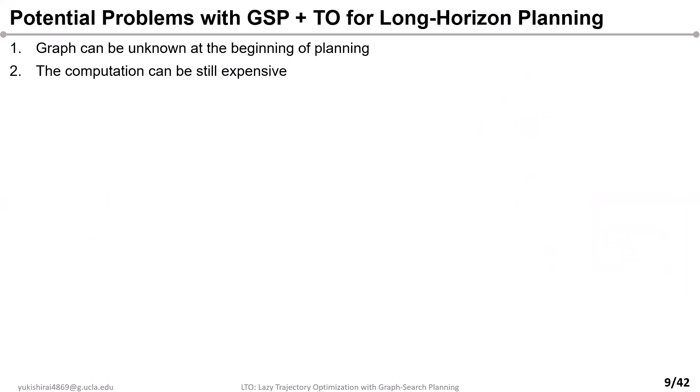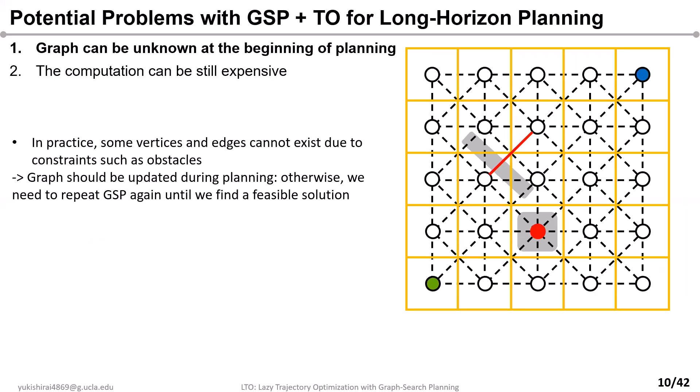However, there are several problems with this typical integrated planner. First, for the typical integrated planner, it is usually guaranteed that vertices and edges are known at the beginning of planning. Then, after GSP finds the globally optimal path, TO is used to refine the trajectory. However, in practice, some vertices and edges cannot exist due to constraints such as obstacles. For example, in this figure, TO cannot refine the trajectory since there is an obstacle on the edge. Hence, there is no guarantee that the path obtained by GSP is feasible for TO.